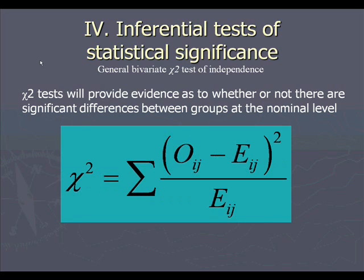And here's the formula, which looks slightly different than the formula you may have seen a couple of slides ago. The subscripts i and j represent rows and columns. In the case of a bivariate chi-square, you're always comparing observed values to expected values within a specific cell.